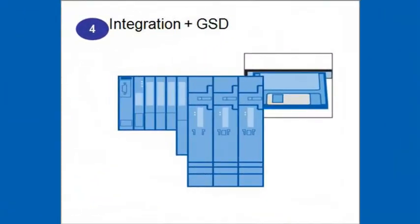You have to create a GSD file to specify the communication properties of your field device. This file can be created with a commercially available XML editor. PI provides a free GSDML viewer for verification.